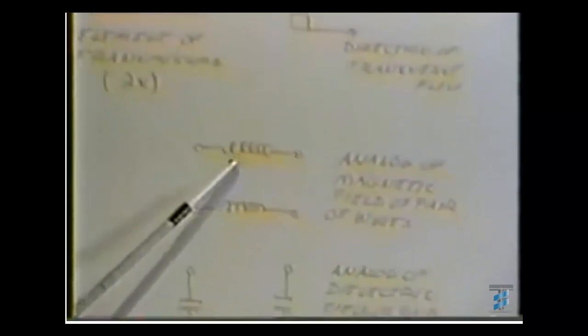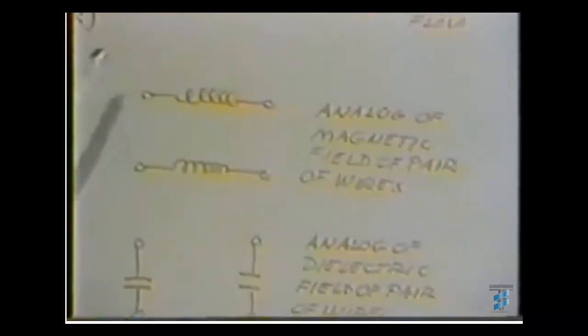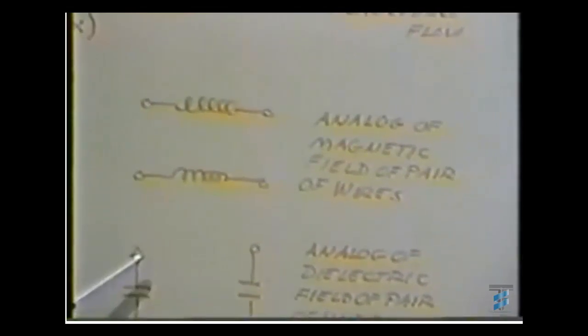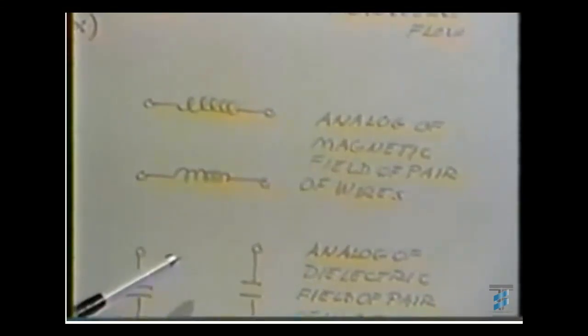Now our analog of the magnetic field of the wires can be a pair of inductance coils, filter chokes, or radio frequency chokes, or transformer coils, or anything that has the ability to store and return magnetic energy.